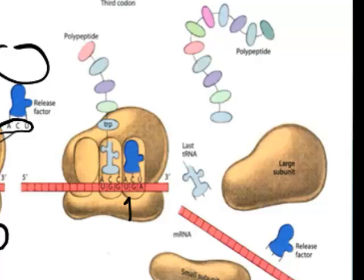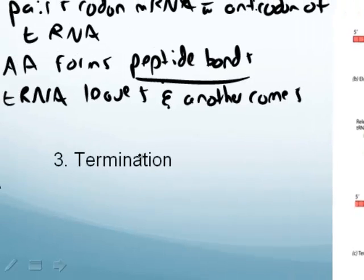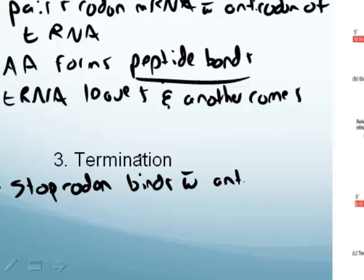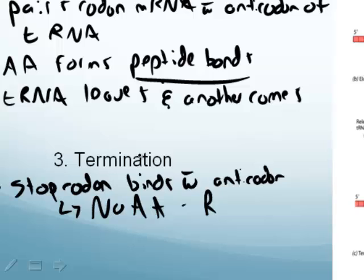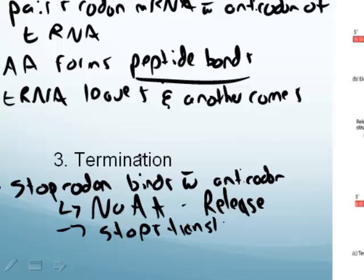When the release factor binds, it causes the ribosome and the mRNA to separate, and the polypeptide chain is released into the cytoplasm where it can fold and become a protein. So to summarize: the stop codon binds with the anticodon, but there's no amino acid — just a release factor — and this stops translation. The result is a polypeptide chain in exactly the sequence we wanted, based on what the mRNA strand told us.